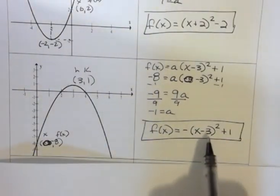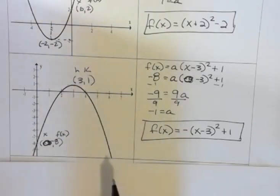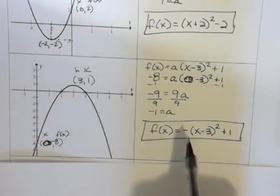So there's my final equation for that particular graph. Notice that my h and my k, I can see right here, and then the fact that it's opening down is why I have a negative.